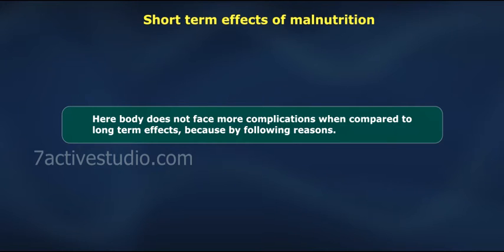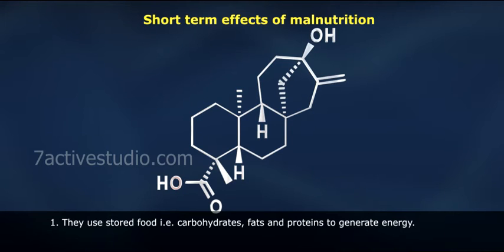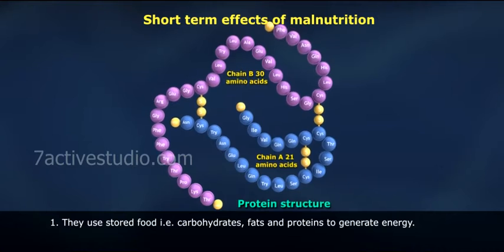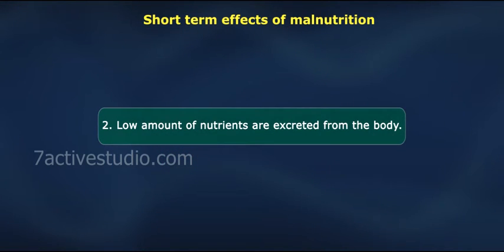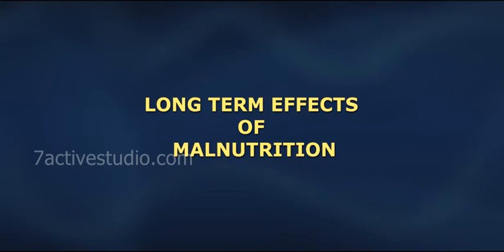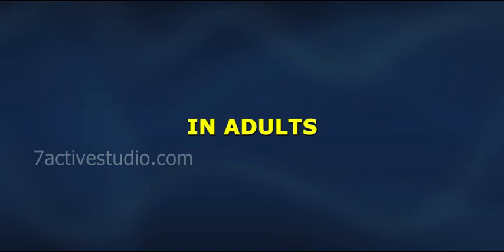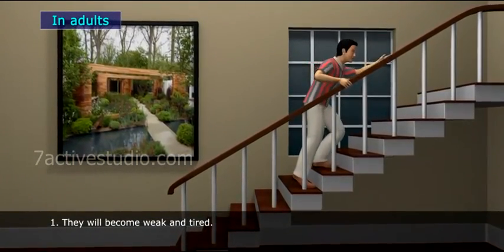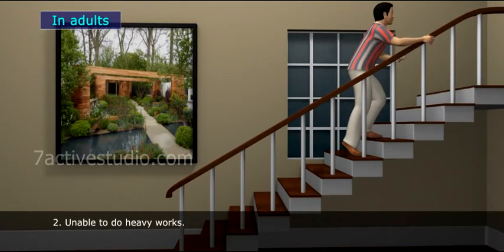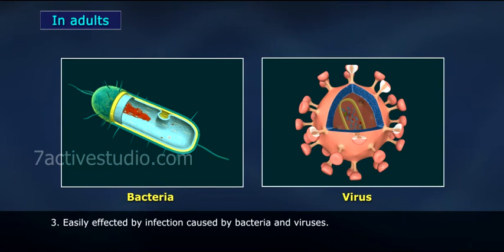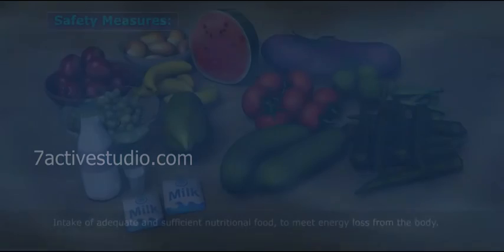Short-term effects of malnutrition: The body does not face more complications when compared to long-term effects because: 1. The body uses stored food — that is, carbohydrates, fats, and proteins — to generate energy. 2. Low amounts of nutrients are exerted from the body. Long-term effects of malnutrition differ between adults and children.